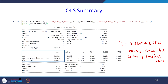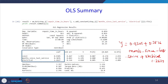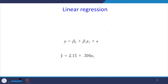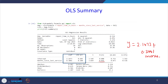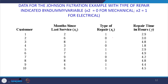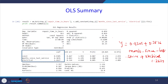R² is 0.85 — previously with only one independent variable, R² was 0.534; after introducing the dummy variable it increased to 0.589... Look at the F-statistic: the p-value is very low, less than 0.05, so the model as a whole is significant. Individually, months_since_last_service has p-value less than 0.01, and the type of repair (electrical reference) is also less than 0.05 — both variables are significant.